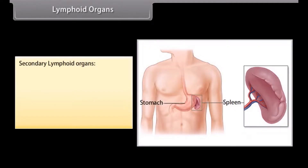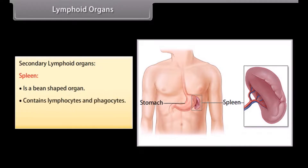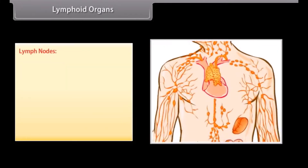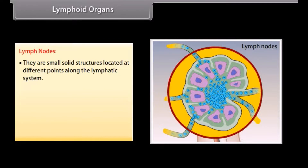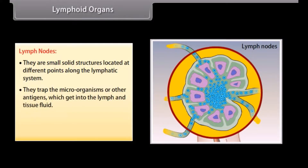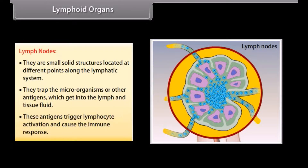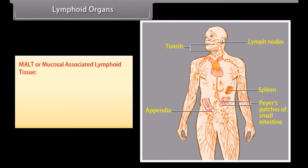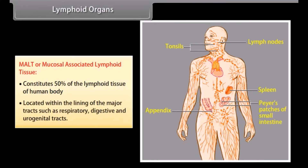Spleen is a bean-shaped organ that contains lymphocytes and phagocytes, and acts as a filter of the blood by trapping blood-borne microorganisms. Lymph nodes trap the microorganisms or other antigens which get into the lymph and tissue fluid; these antigens trigger lymphocyte activation and cause the immune response. MALT (mucosal-associated lymphoid tissue) constitutes 50% of the lymphoid tissue of the human body and is located within the lining of major tracts such as respiratory, digestive, and urogenital tracts.